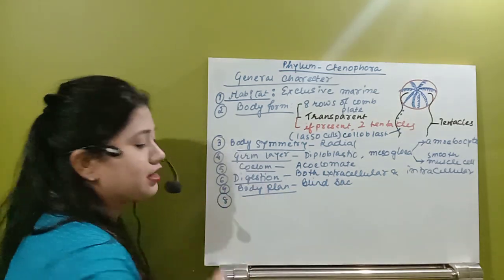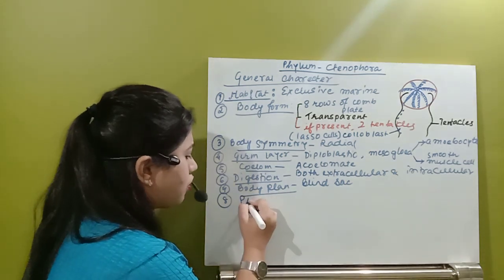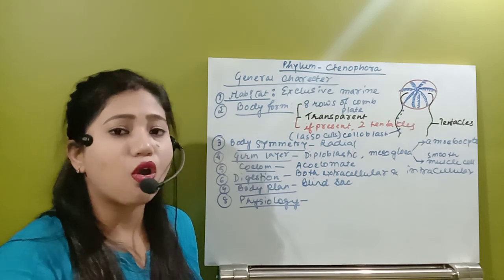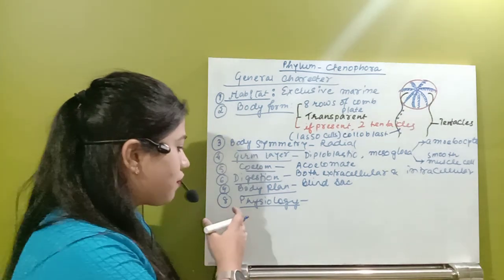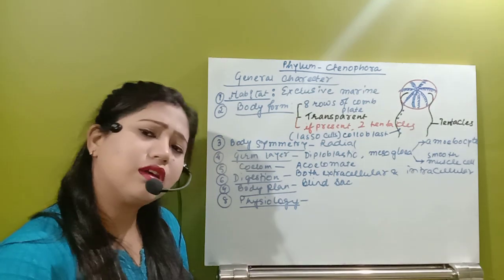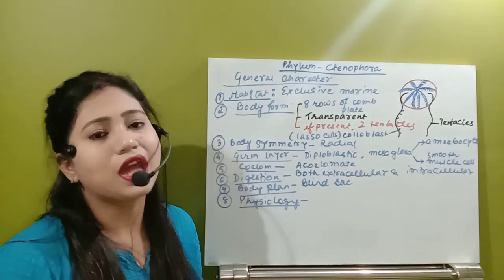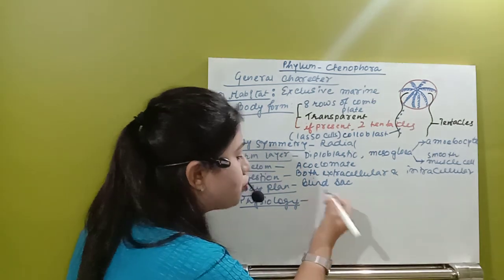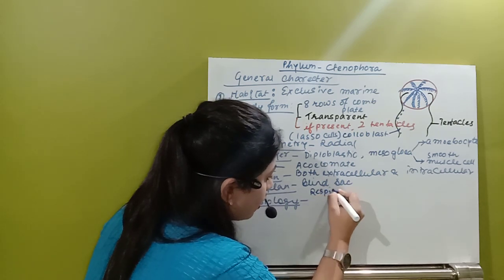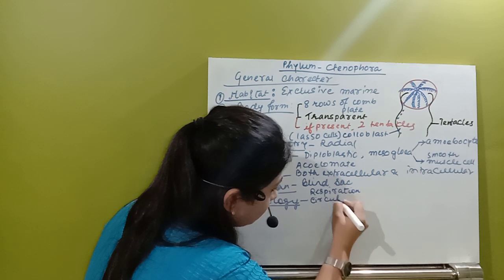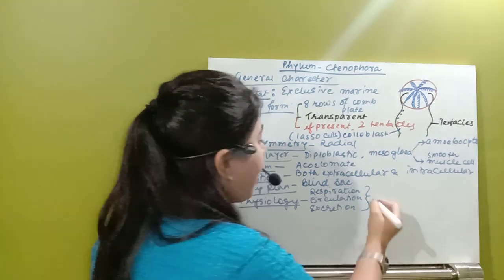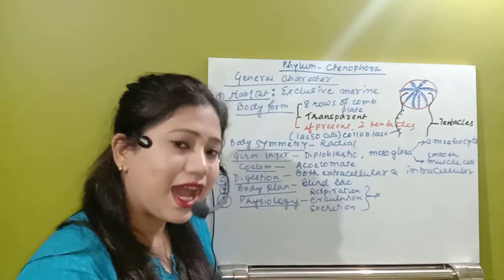The next characteristic is about their physiology. In case of their physiology, the respiration process, circulation process, and excretion process are absent. They don't have respiration, circulation, or excretion. They are going to have simple diffusion to take in and remove gases. So respiration, circulation, and excretion are absent. But yes, in case of them there is a type of nervous system — a diffused type of nervous system.